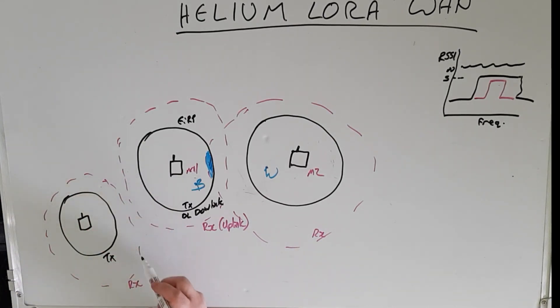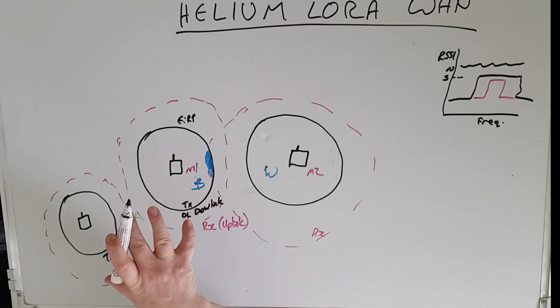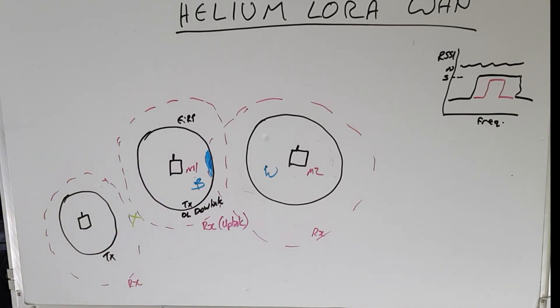Now here we can see there is no overlap in transmit coverage and no overlap in receive coverage either. So there is nothing there. So neither of these will be witnesses to each other's beacons. So how do we go about improving this? Say for example miner number one. How can we improve this guy's performance by getting it more witnesses and as a result earning more HNT?